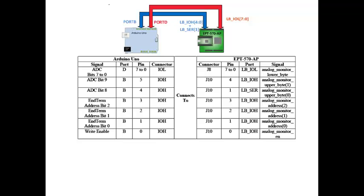Port D is an 8-bit port that is used to connect the lower 8 bits of the sample to the input of the APT570AP. Bits 8 and 9 of the sample are connected to bits 4 and 5 of port B. The address for the end terms is 3 bits and occupies bits 1, 2, 3 of port B. There's also a 1-bit control line used to inform the CPLD that a byte is ready to be written to the USB. This is bit 0 of port B, also called the write enable.